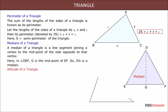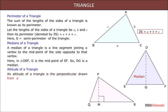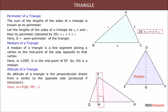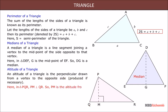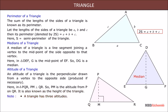Altitude of a triangle: an altitude of a triangle is the perpendicular drawn from a vertex to the opposite side, produced if necessary. Here, in triangle PQR, PM is perpendicular to QR, so PM is the altitude from P on QR. It is also known as the height of the triangle. A triangle has three altitudes and three medians.